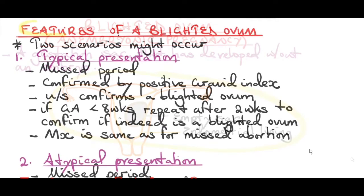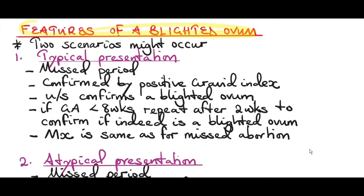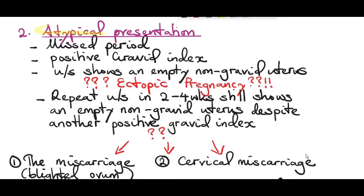What are the clinical features of a blighted ovum? You can have two scenarios. The typical presentation is where a patient complains of a missed period, and when you do a pregnancy test it comes out positive. Ultrasound confirms a blighted ovum — there will be a gestational sac without an embryo. But if the gestational age is less than eight weeks, remember we repeat the ultrasound after two weeks to confirm if it indeed is a blighted ovum. The management of a blighted ovum is the same as for a missed abortion.